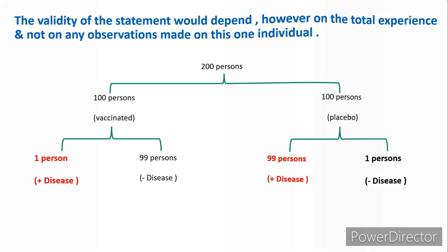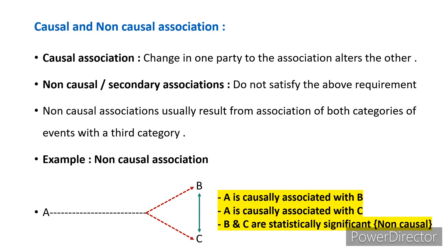Causal and non-causal associations: a causal association is where a change in one party to the association alters the other — A is causing B, so if you alter A, there will be some change in B. Any other associations which do not satisfy this requirement are considered non-causal or secondary associations.